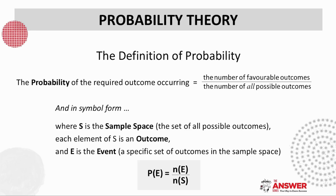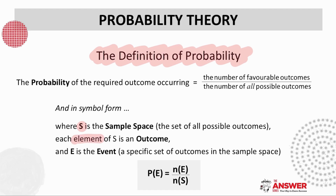We will conclude this introduction video with looking at the definition of probability. It can also be written in symbol form, where S is what we call the sample space, which refers to the set of all possible outcomes — like the 26 smarties we just worked with. Each element of S is what we call an outcome, so in terms of the smarties, this would be each individual smartie. E is the event, which refers to the specific set of outcomes in the sample space, like specifically the yellow smarties. So the probability of the specific event happening is the number of that specific outcome over the total number of possible outcomes in the sample space. This definition of probability will play an important role throughout the section.